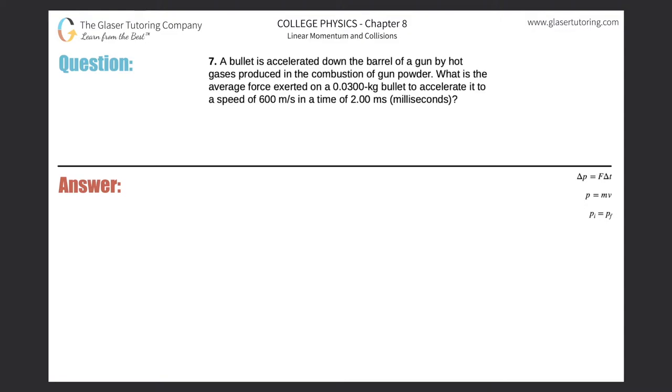Number seven: A bullet is accelerated down the barrel of a gun by hot gases produced in the combustion of gunpowder. What is the average force exerted on a 0.03 kilogram bullet to accelerate it to a speed of 600 meters per second in a time of two milliseconds? First thing is I realize that they're giving me speeds, masses, talking about forces and time.